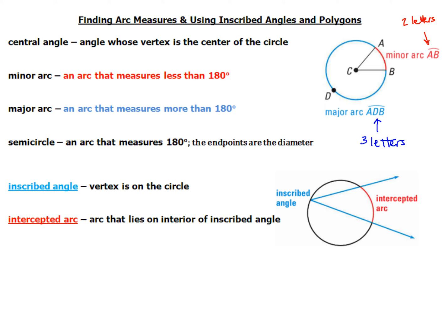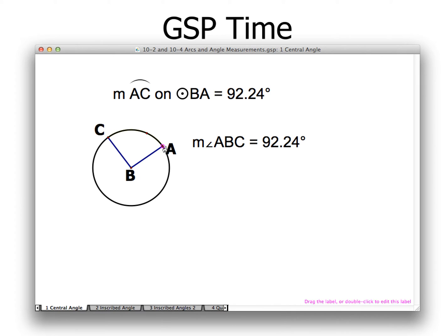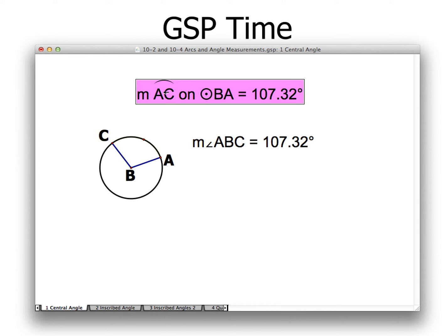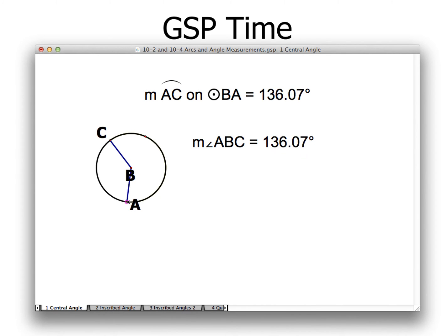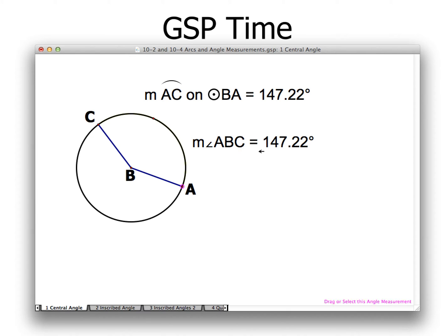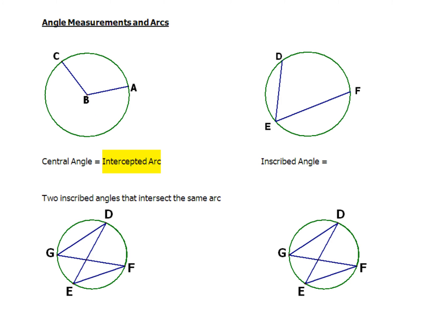Now we're going to play around with this in our notes. Our central angle is going to be angle B, or angle ABC, or angle CBA. The arc AC represents the arc measurement from A over to C, and angle ABC represents our central angle. No matter what we change the angle to, it's always going to equal the intercepted arc. So the measure of the central angle equals the intercepted arc.